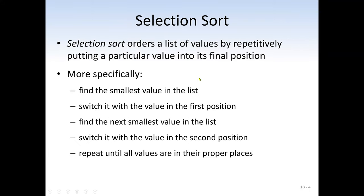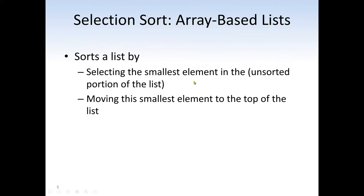We start with selection sort. Selection sort orders a list of values by repeatedly putting a particular value into its final position. The algorithm works as follows: find the smallest value in the list, then switch it with the value in the first position. Find the next smallest value, switch it with the value in the second position, and repeat until we reach the end of the list.